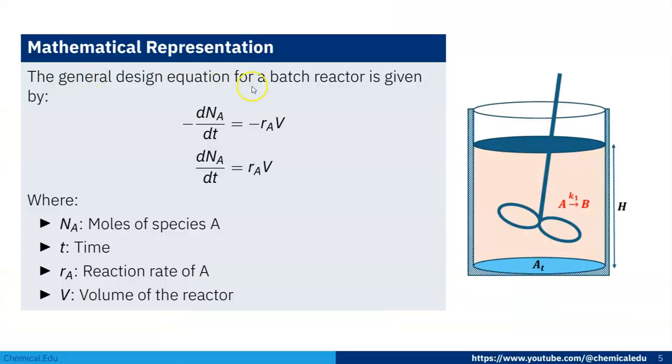Now the general design equation of the batch reactor is given by minus dNA/dt is equal to minus rA into V. So both side minus minus cancel.